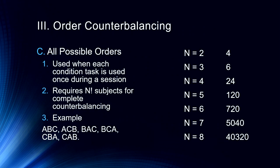All possible orders counterbalancing works with a small number of conditions. With three conditions, there are six possible orders — ABC, ACB, BAC, BCA, CBA, CAB — giving complete counterbalancing every six participants. With four conditions, there are 24 orders, which is still manageable. But once we get to five, six, seven, or eight conditions, it becomes impossible — we can't run 40,000 subjects for complete counterbalancing. So we need a different approach.